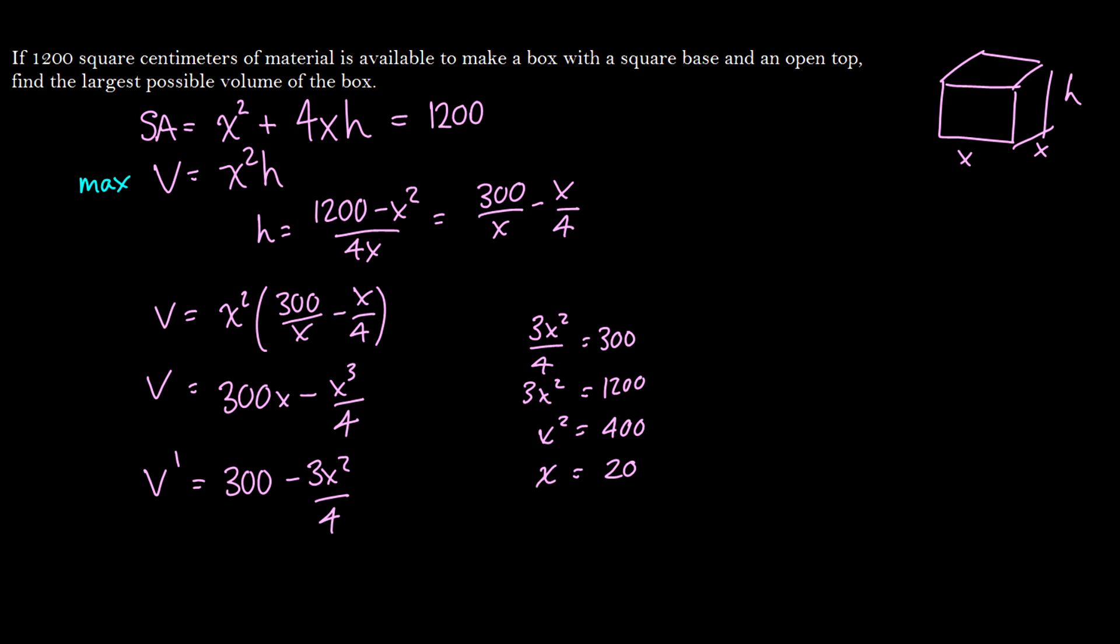Which, if we plug back into our surface area function, we will find that this implies that h is going to be equal to 10. So what is the volume of our big box? Our volume is going to be 20 squared times 10, which will be 4,000 centimeters cubed.